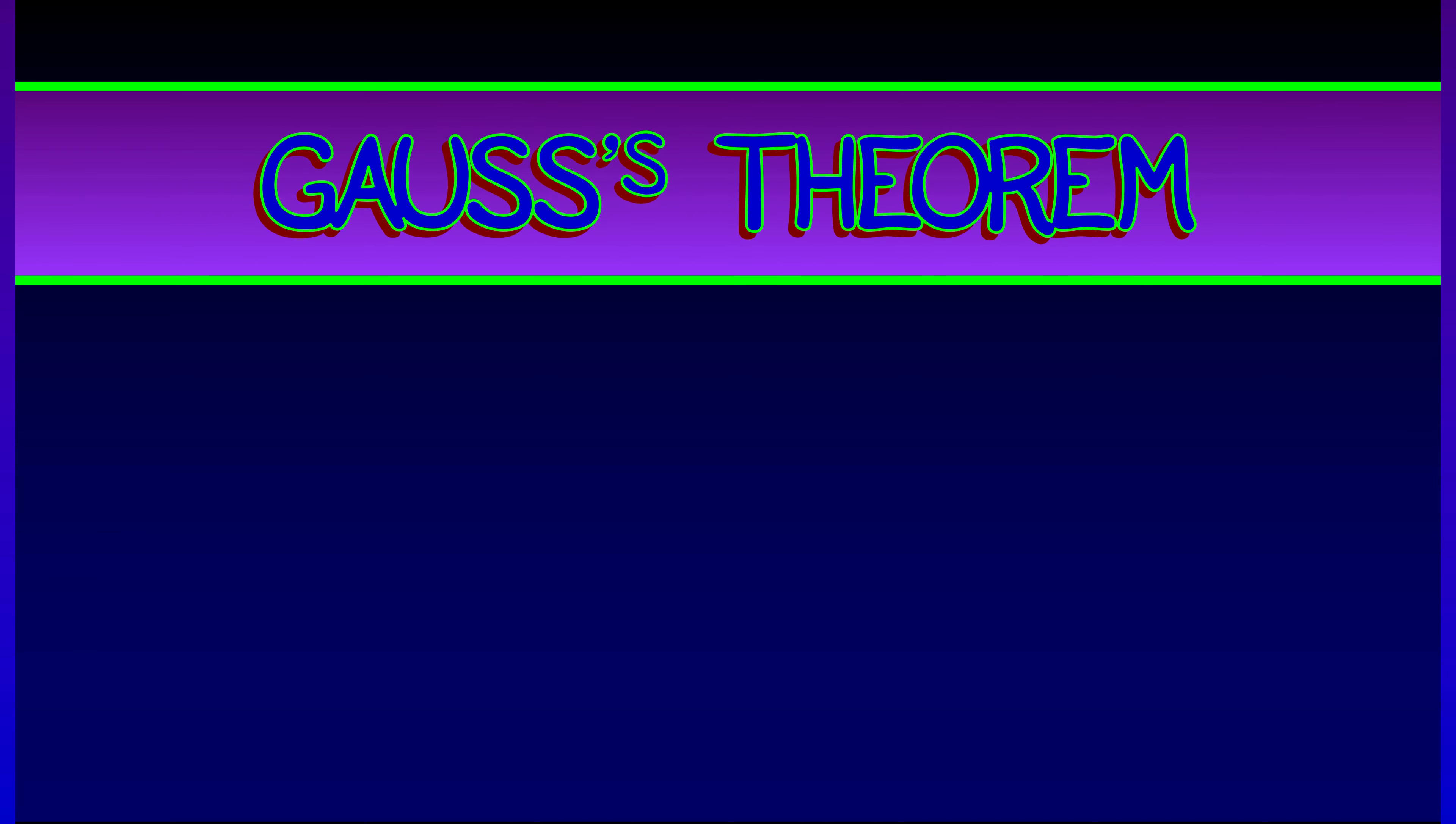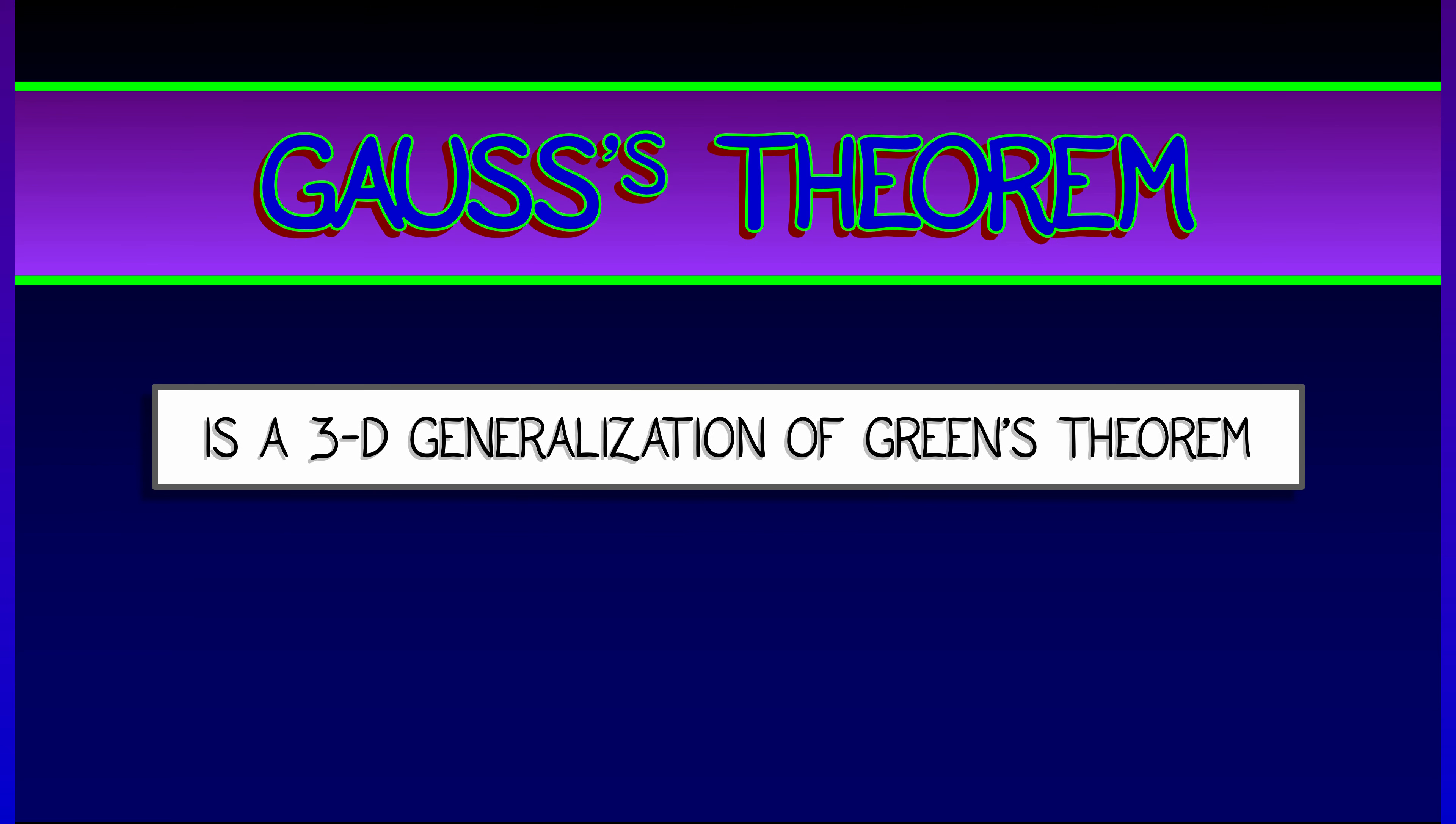As we have seen, Gauss's theorem was really just a three-dimensional generalization of Green's theorem, but the flux form of Green's theorem to be precise. There's more than one way to view Green's theorem, and there's more than one way to generalize it to 3D.